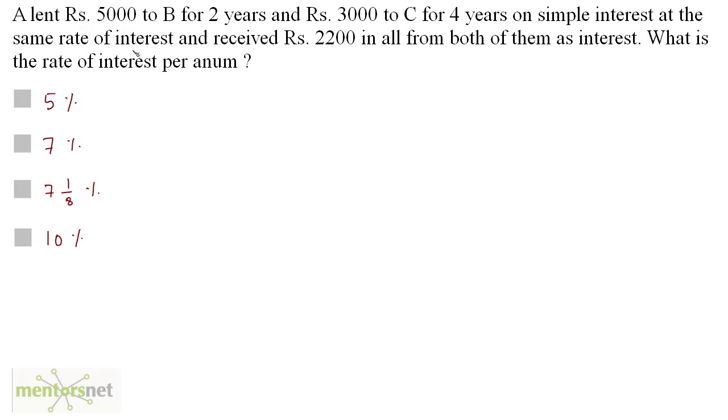Well, A received 2200 rupees from both B and C as interest. So simple interest paid by B plus the simple interest paid by C will be equal to 2200, isn't it?